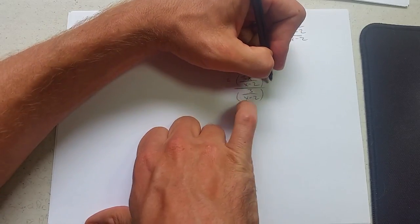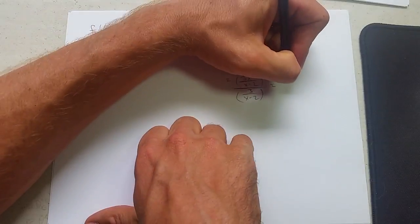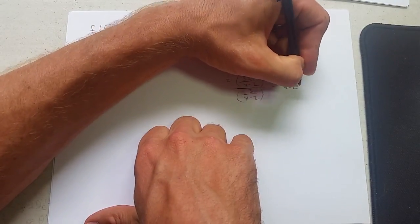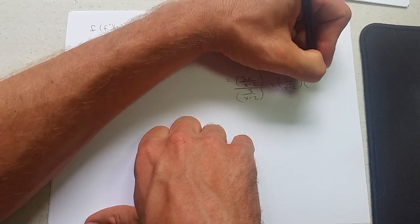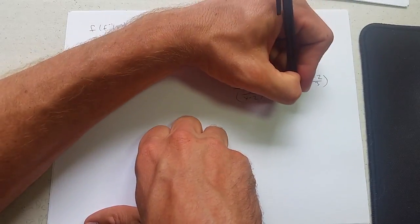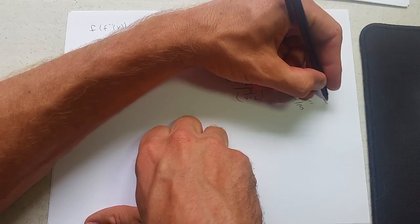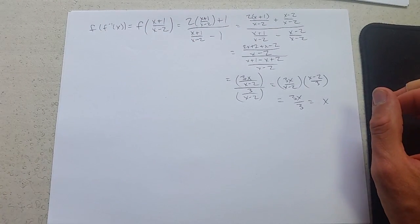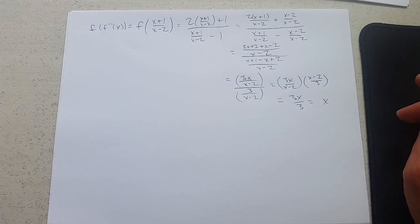Now we're ready to multiply by the reciprocal of the denominator. x minus 2 x minus 2 cancels. 3x divided by 3, which is x. That was some pretty intense algebra right there.